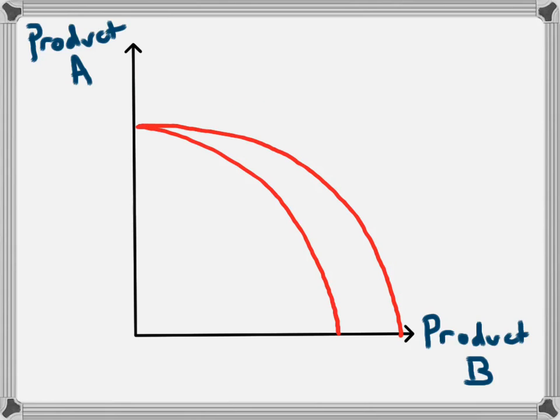If we have a production possibility frontier that looks like this, with a shift outwards, it means that there has been an increase in technology or more resources which can only be used in the production of Product B. So the maximum amount of Product A remains at the same point, but the maximum amount of Product B will move outwards to a new point.